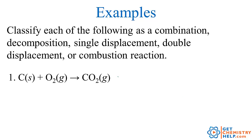Let's go through a few examples and identify which type of reaction each one is. Here's carbon combining with oxygen to make carbon dioxide. At first glance it almost looks like a combustion reaction because we have carbon and oxygen combining. But remember, for a combustion reaction you've got to have a hydrocarbon — carbon and hydrogen — combining with oxygen to make carbon dioxide and water. In this case we just have two different substances combining to make one substance, so this would be a combination reaction.